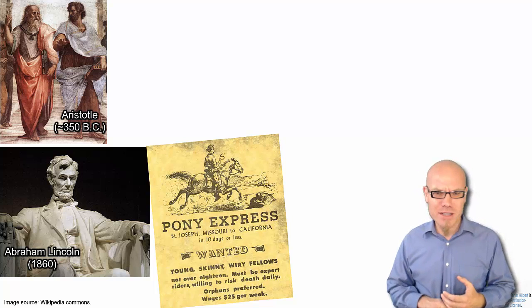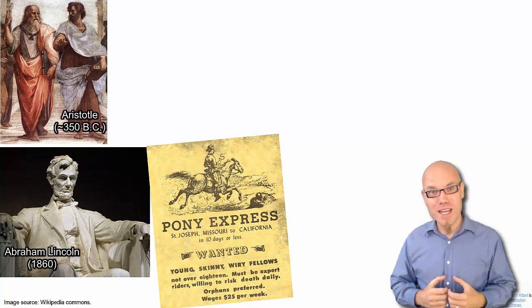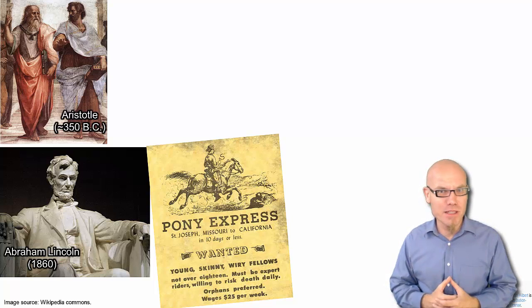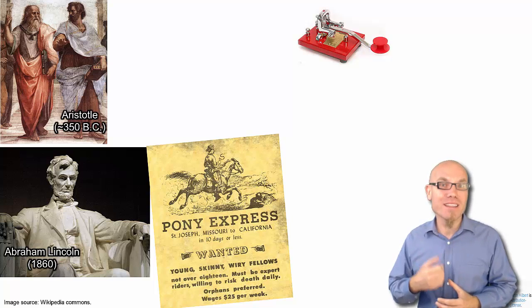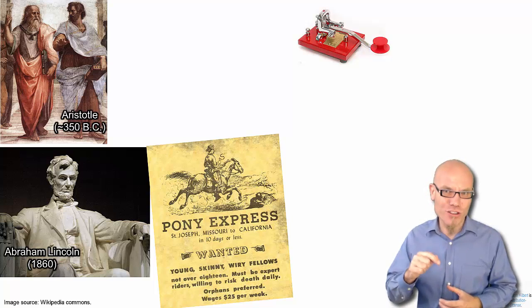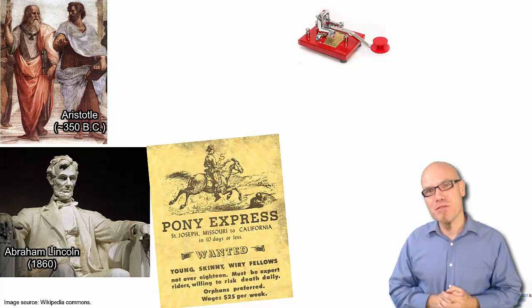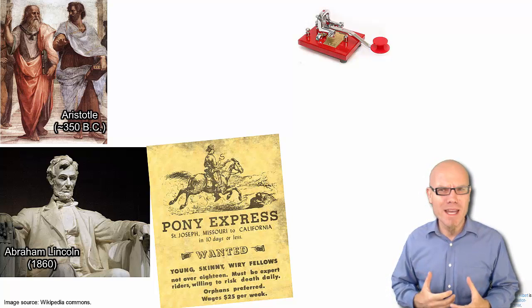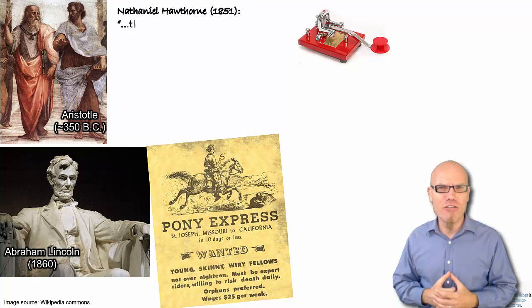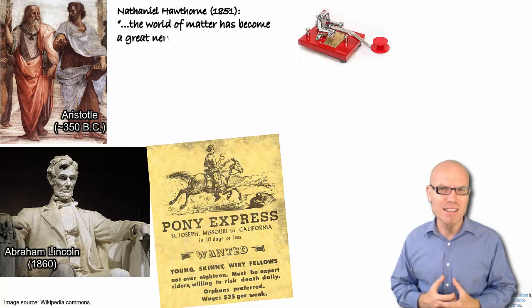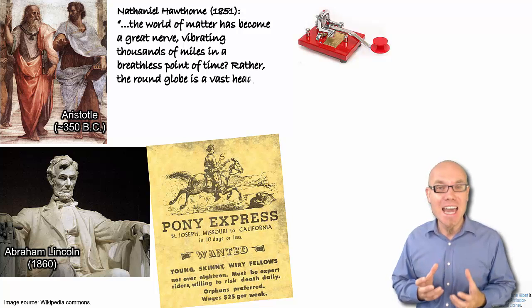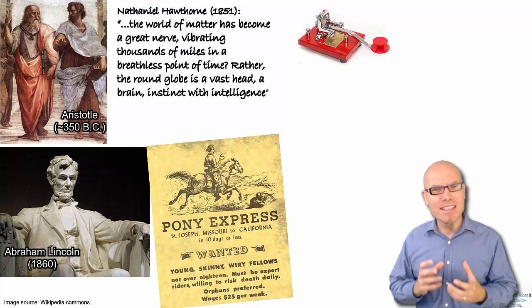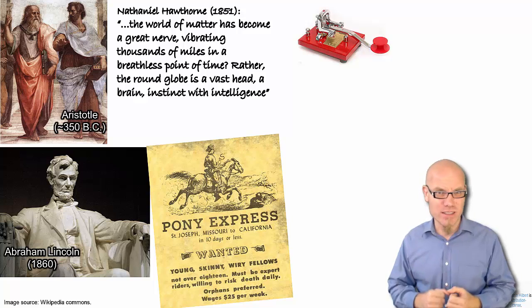In other words, people in California had no idea who was actually president for one week because information couldn't travel faster from the East Coast to the West Coast. But around this time already, people were very impressed by the great advancements of information communication technologies, for example, by the telegraph that used Morse code. So people were starting to say that the world of matter has become a great nerve vibrating thousands of miles in a breathless point of time. Rather, the round globe is a vast head, a brain, instinct with intelligence.